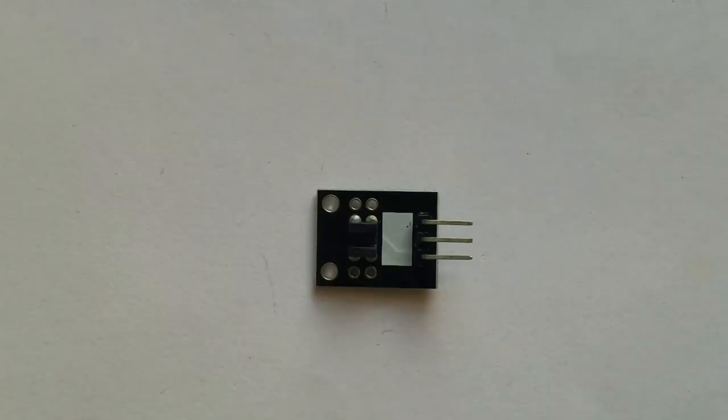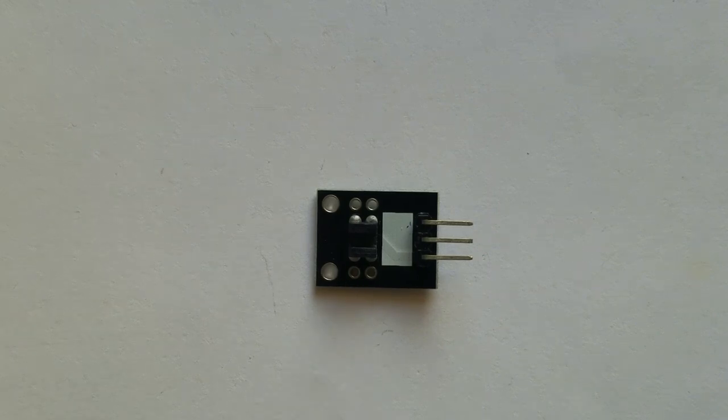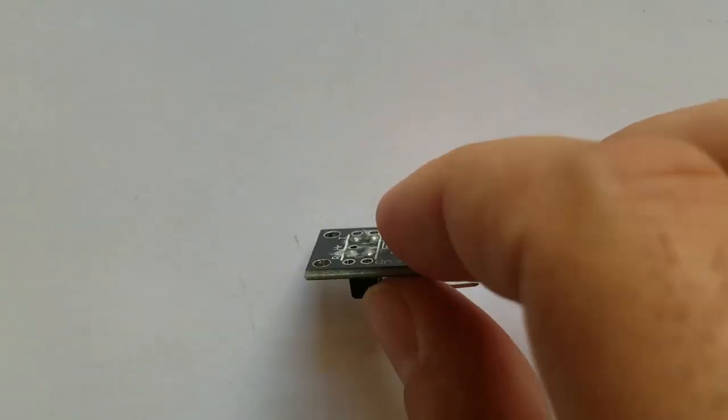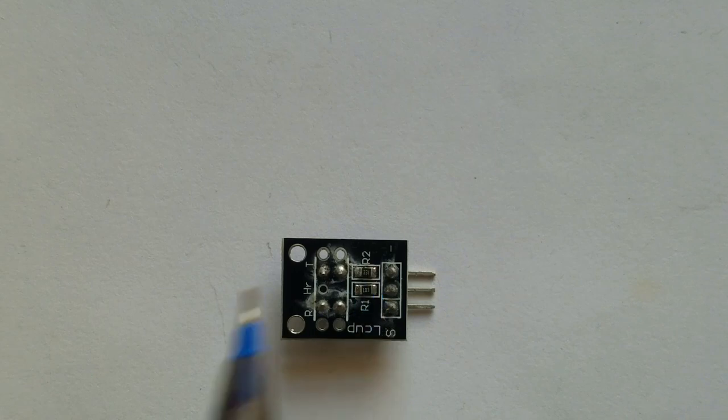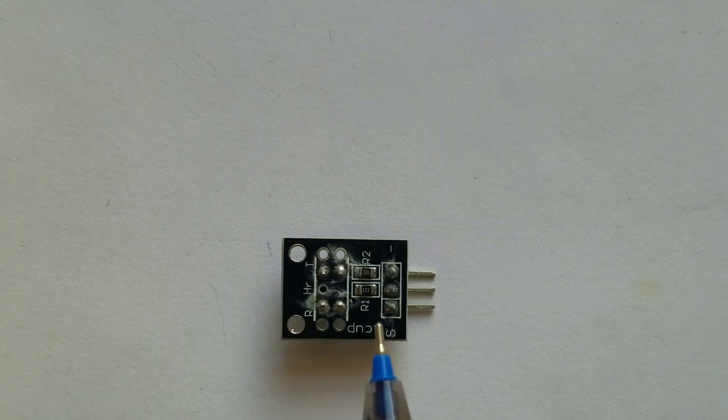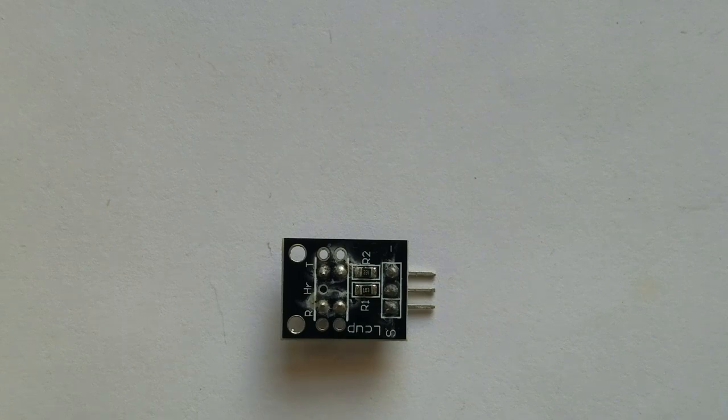This module has integrated on board a photo interruptor or optical broken and two resistors, R1 and R2. Resistor R1 is 10 kiloohms and resistor R2 is 330 ohms. The main reason for using the resistors is to limit current circulating inside the module, in other words, to prevent current from burning our module.